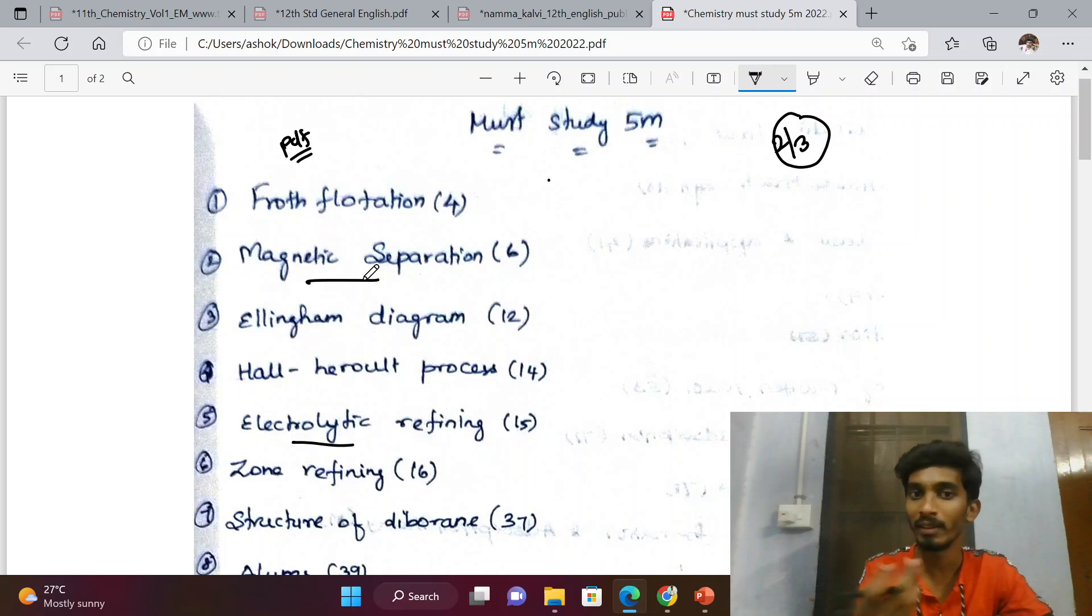Magnetic separation - 3 marks, but sometimes 5 marks. This question can be asked for 3 marks as well as 5 marks.